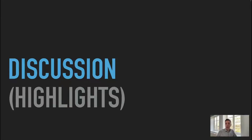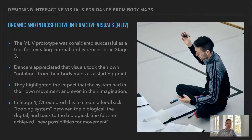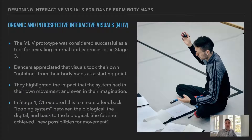I will now present highlights from the discussion in the paper. Organic and introspective interactive visuals: the MLIV prototype was considered successful as a tool for revealing internal bodily processes in stage 3. Dancers appreciated that the visuals took their own notation from their body maps as a starting point, and highlighted the impact that the system had on their own movement and imagination. In stage 4, C1 explored this to create a feedback looping system between the biological, the digital, and back to the biological. She felt she achieved new possibilities for movement.